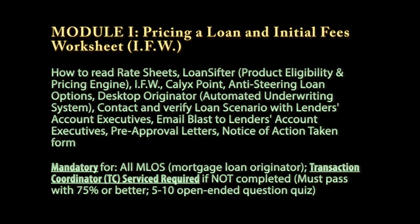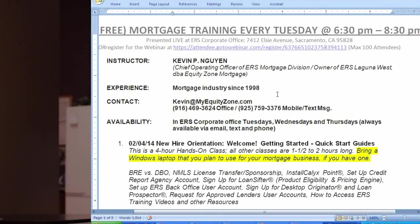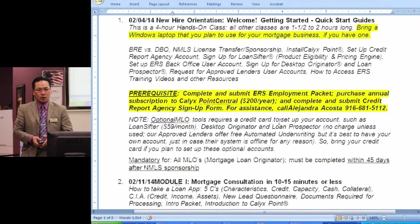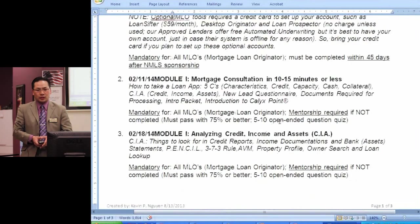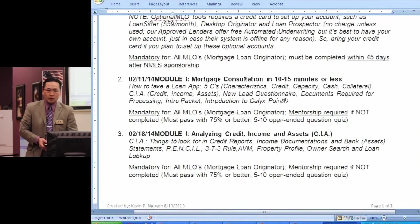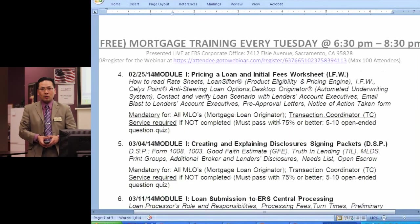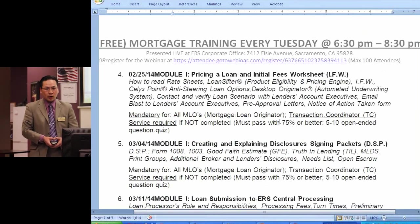Welcome everyone. My name is Kevin Nguyen. I am the Chief Operating Officer for Elite Mortgage. On the screen, I want to reiterate what the syllabus is for the next ten videos that we're doing. The first one we did was on the consultation in 10 or 15 minutes or less. Last time we did the Analyze Credit Income and Asset. Today what we're looking at is pricing a loan, basically completing the initial fee worksheet, which is a loan option sheet for us.